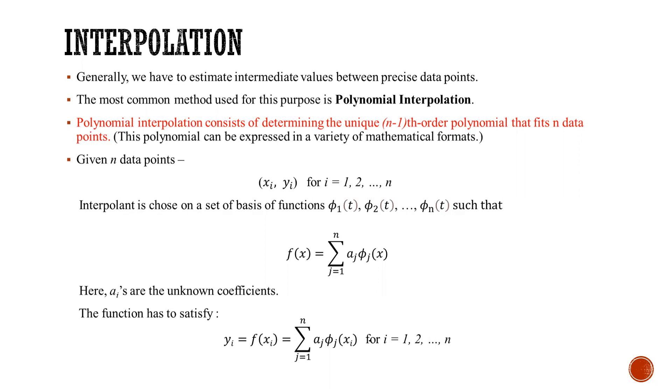Now see how it works. Given n data points (xi, yi) for i equals 1 to n, we choose interpolant on a basis of functions φ₁, φ₂, ..., φₙ such that f(x) can be written as the summation of aj φj(x) where j goes from 1 to n.